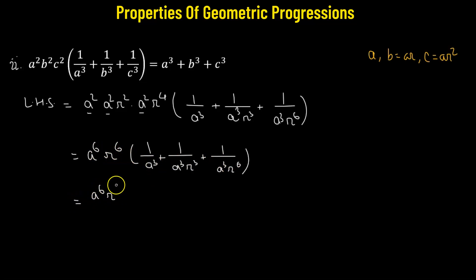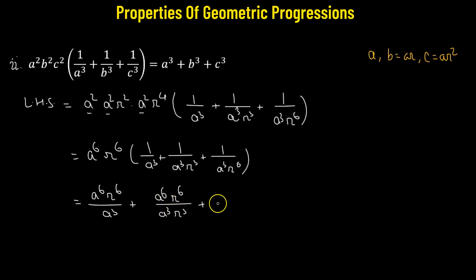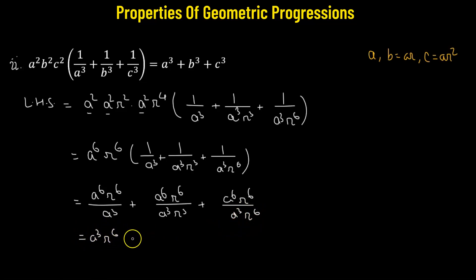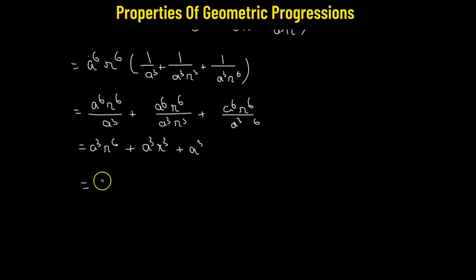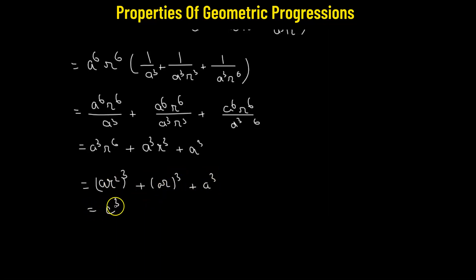So we have a to the power of 6 times r to the power of 6 divided by a cubed, plus a to the power of 6 times r to the power of 6 divided by a cubed r cubed, plus a to the power of 6 times r to the power of 6 divided by a cubed r to the power of 6. This gives us a cubed r to the power of 6 plus a cubed r cubed plus a cubed. We can rewrite this as (ar²)³ plus (ar)³ plus a³, which is c cubed plus b cubed plus a cubed — the expression on the right hand side. Hence proved.